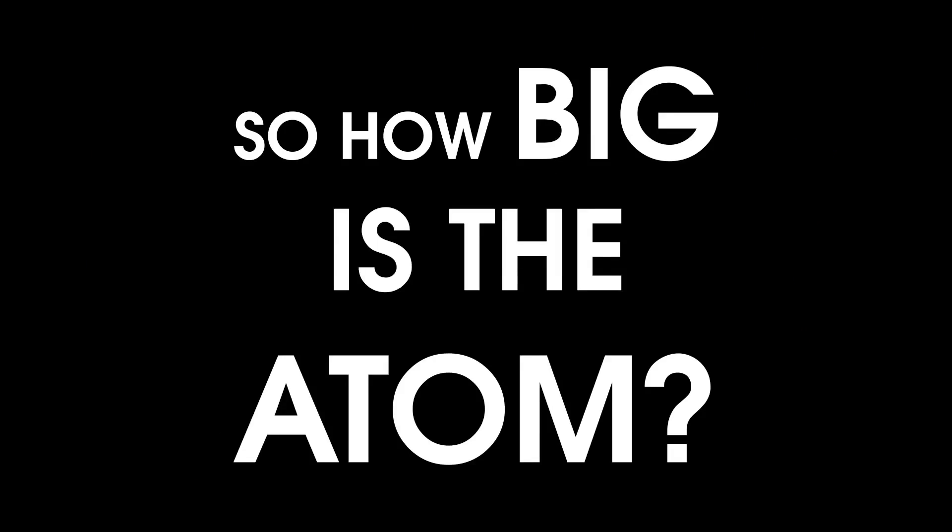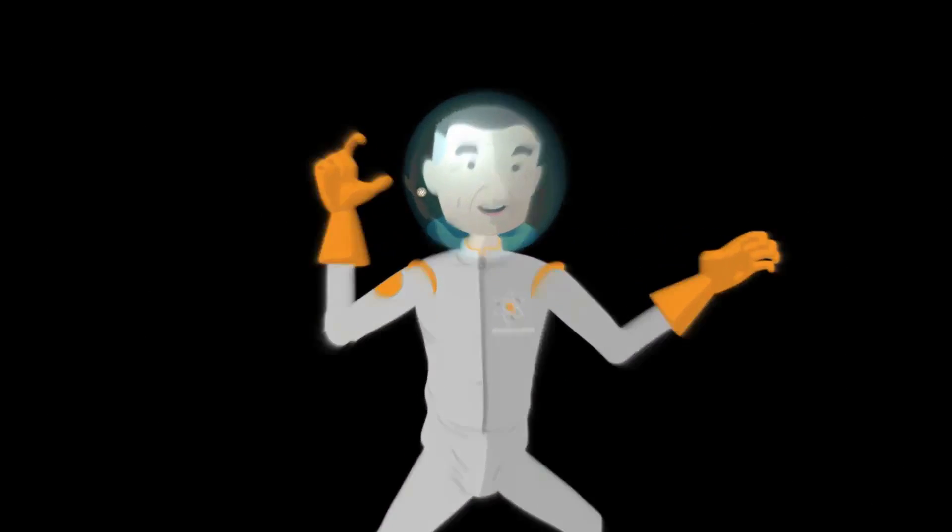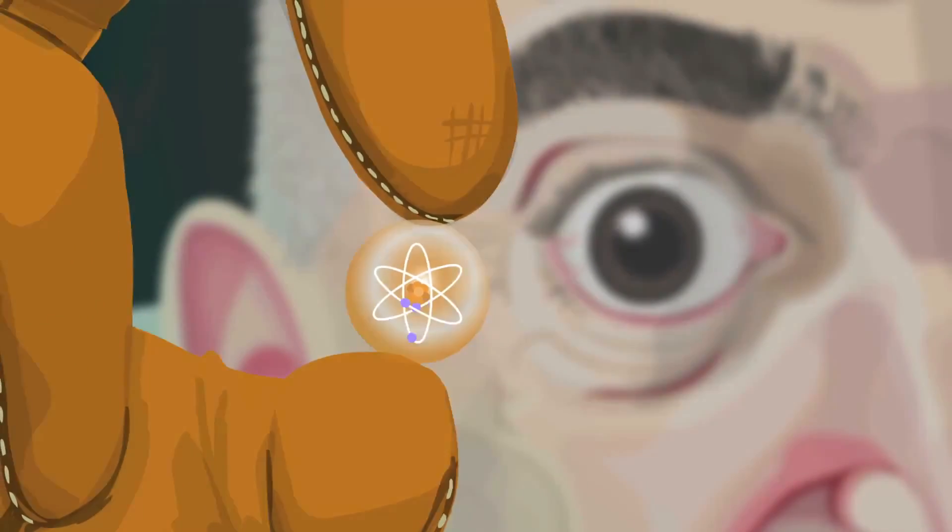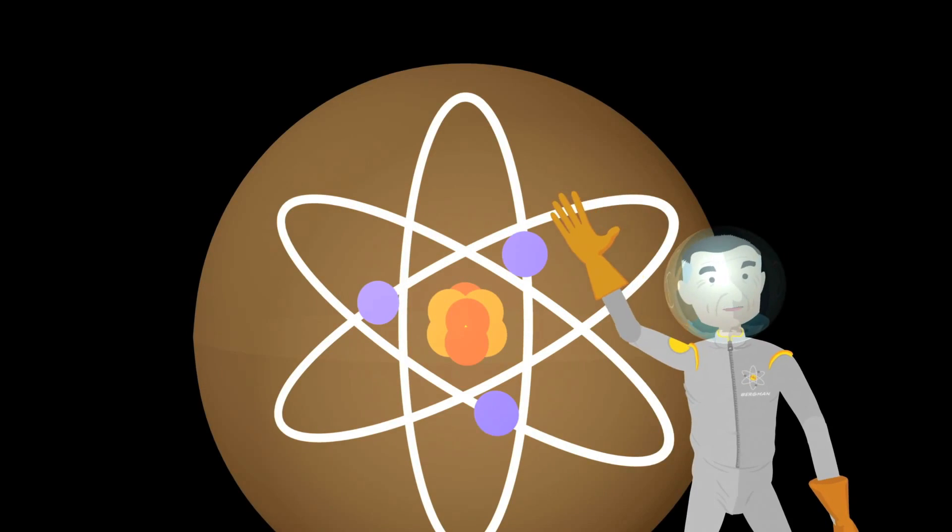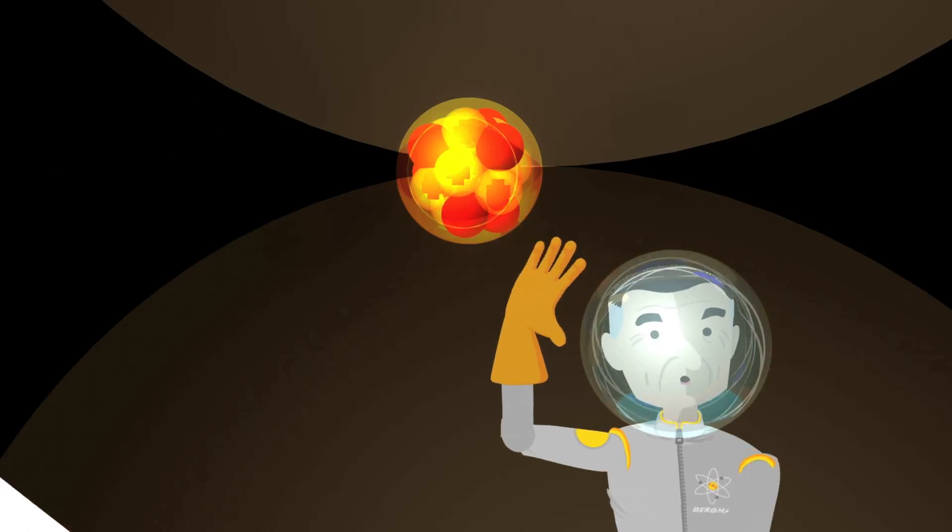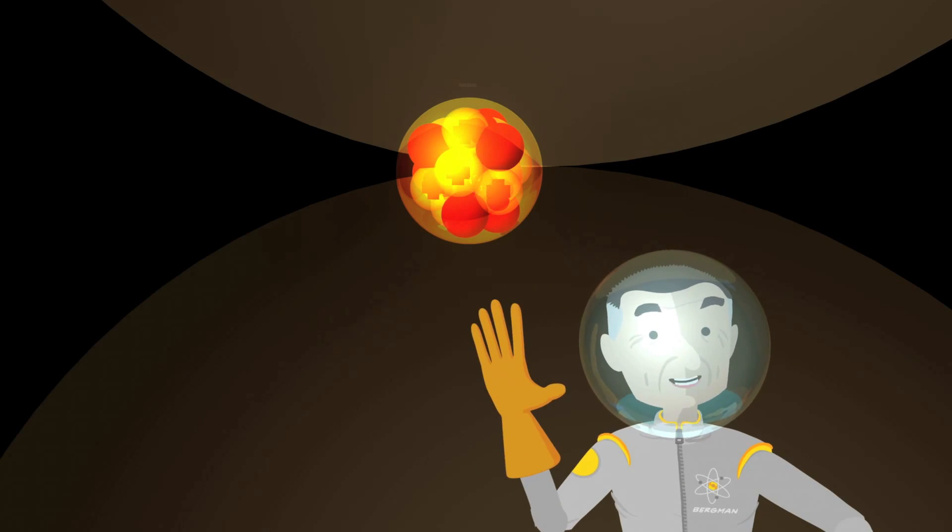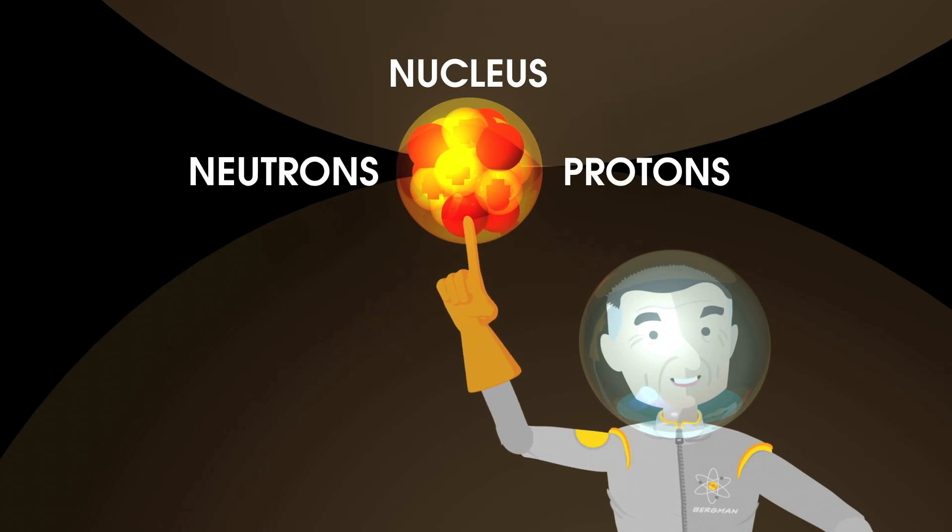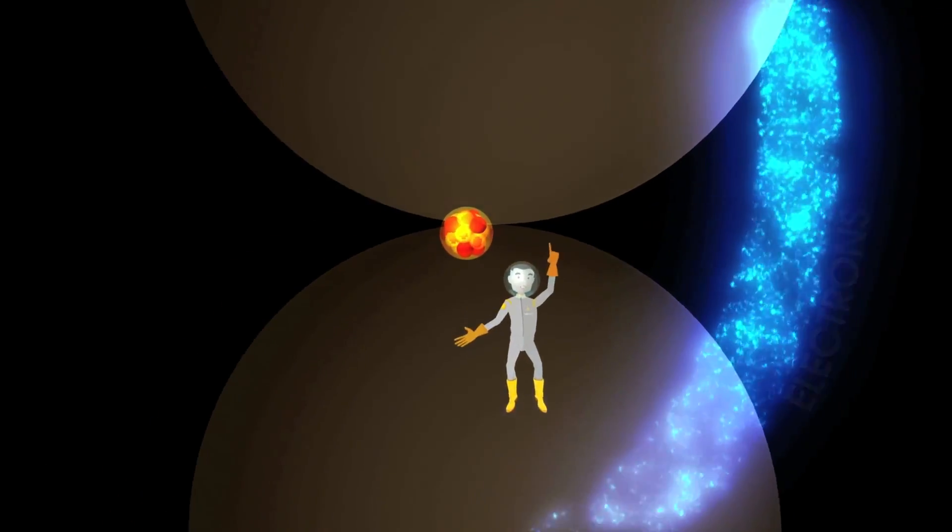So how big is the atom? Well, it's really, really, really, really small. And you know what? It gets even more crazy. Let's now look inside of each atom. That's the blueberry, right? What do you see there? In the center of the atom is something called the nucleus, which contains protons and neutrons. And on the outside, you'd see electrons.